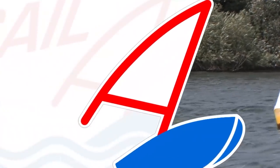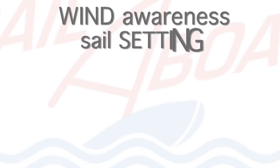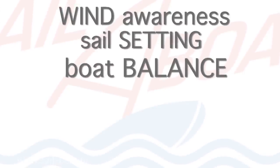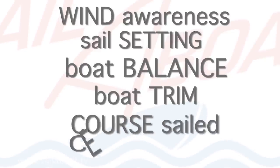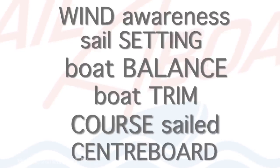Briefly, the six essentials are wind awareness, sail setting, boat balance, boat trim, course sailed and centreboard position. They're all equally important so you must pay attention to all six as you go along to ensure effective sailing.